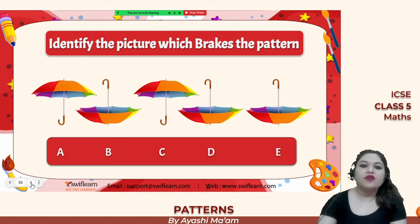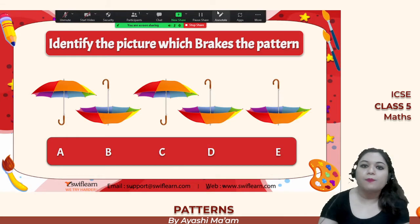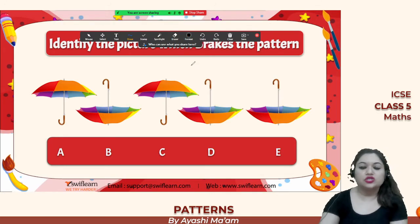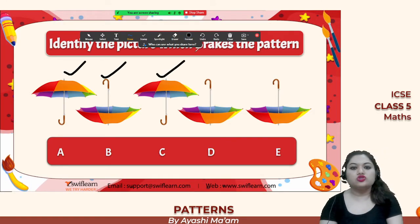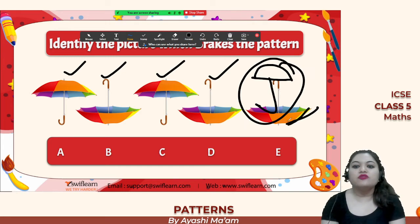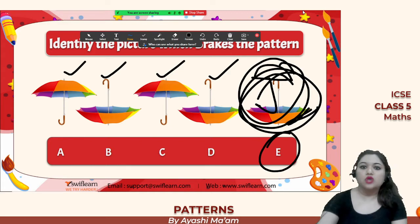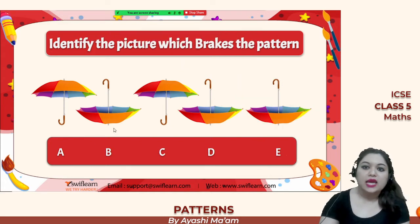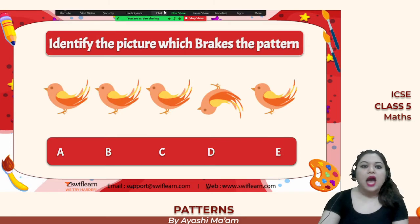Now identify the picture which breaks the pattern. We have: umbrella straight, upside-down, straight, upside-down — so here you should have had a straight umbrella, but instead they gave you an upside-down umbrella. So option E is the picture that is breaking the pattern.